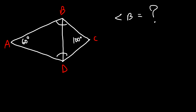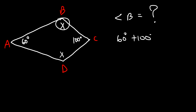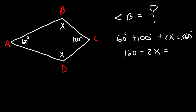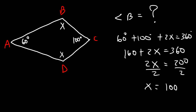If we call angle B equal to x, then angle D must also be x. A kite is a quadrilateral — a four-sided polygon — and the total interior angle sum is 360 degrees. So 60 plus 100 plus 2x equals 360. Since 60 plus 100 is 160, subtracting gives 2x equals 200, so x equals 100 degrees. Angle B is 100 degrees.